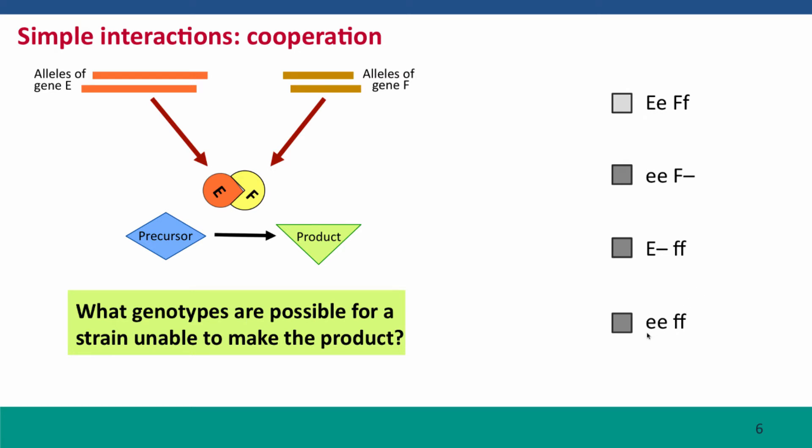Finally, you could be defective for both genes and then you make neither of the subunits and again, make no product. So in this case, the masking is going in both directions.